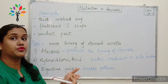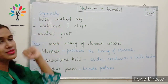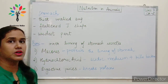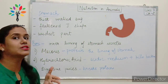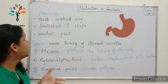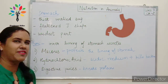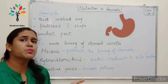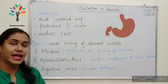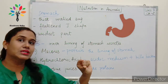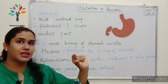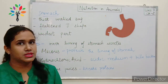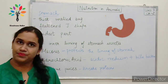From the esophagus, the food enters the stomach. The stomach is a thick-walled bag, somewhat flattened J-shaped. It is the widest part of the alimentary canal. From one end it receives food from the esophagus, and it opens to the small intestine at the other end.